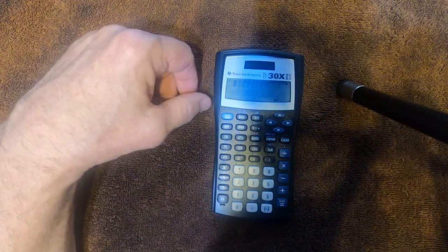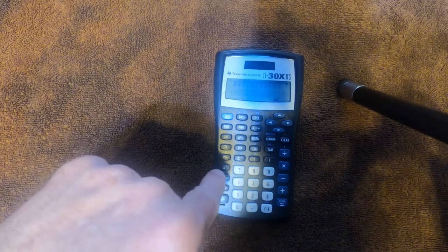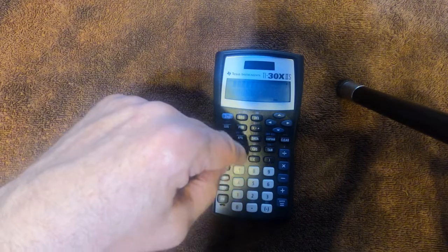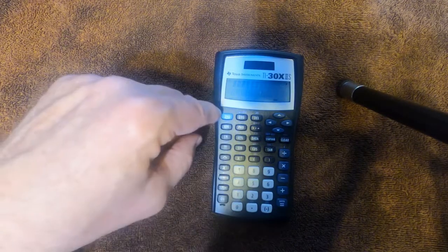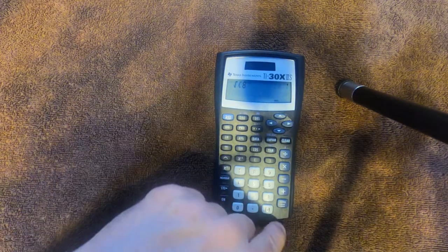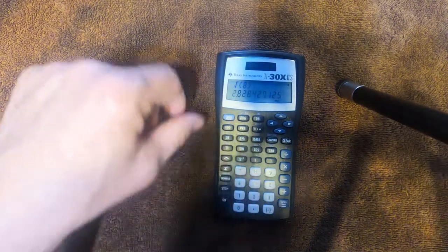If we want to take a root, square root is easy. It's just this one above the x squared, so second square root. Let's say we want the square root of 8. Press second square root, and then press 8. Close the parentheses, enter, and there it is.